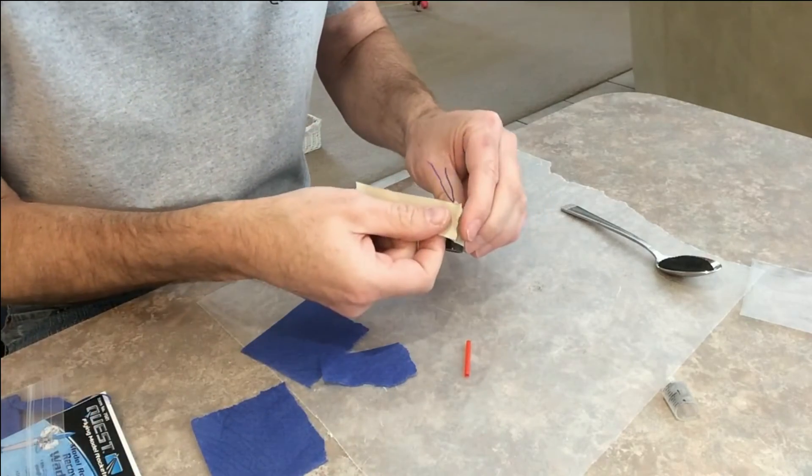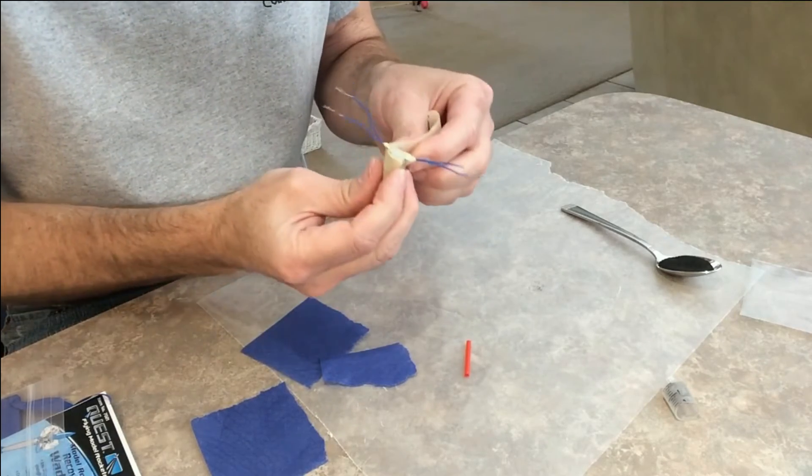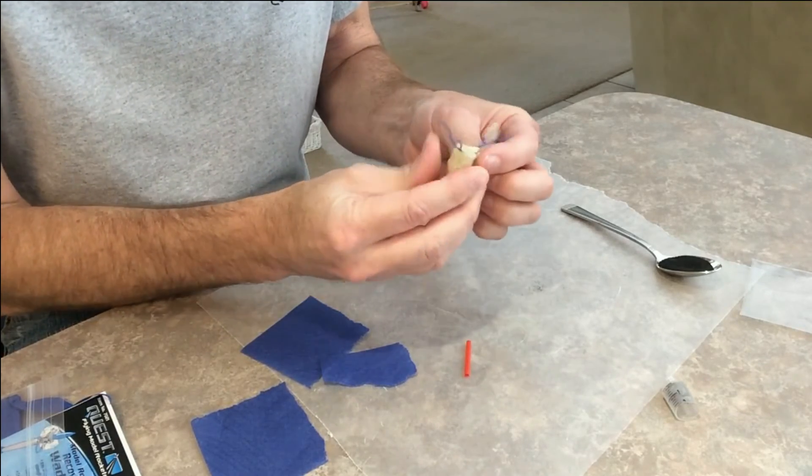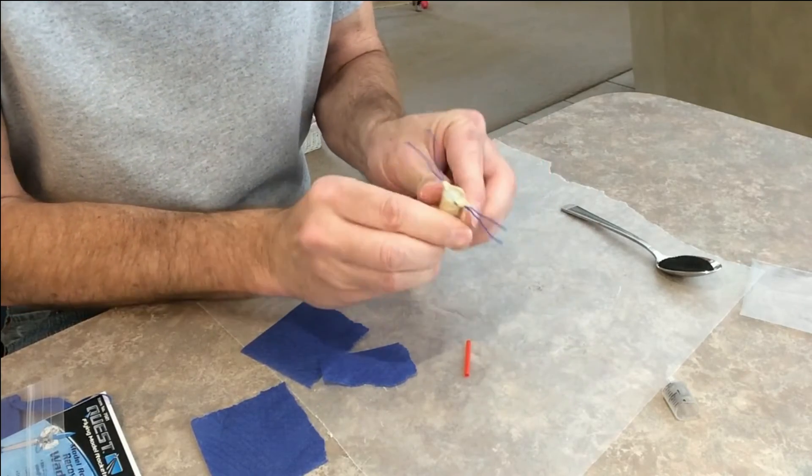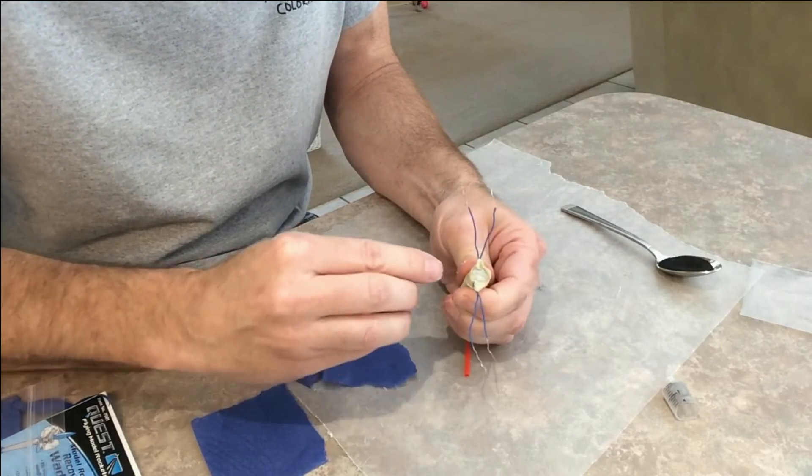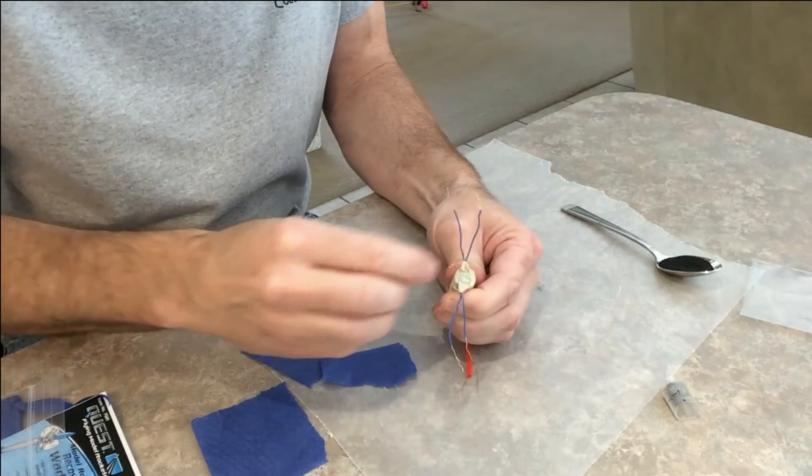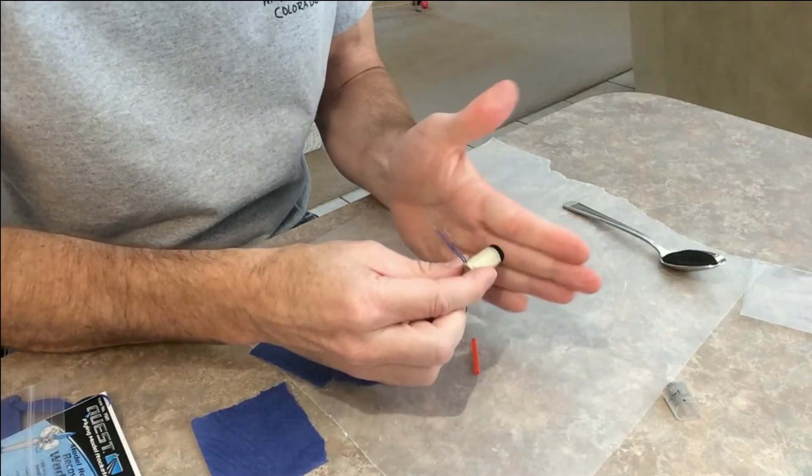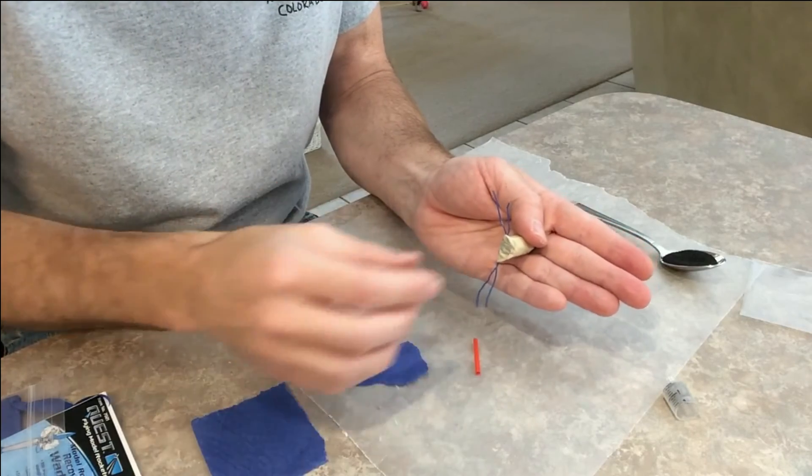So I'm going to wrap this around the whole thing right here. When the ejection charge goes off it's easily going to go through this ejection cap that has the wadding in there. Your ejection charge is going to come out here so if this was up against the bulkhead your ejection charge is going to explode this way.